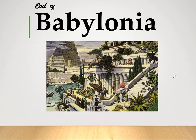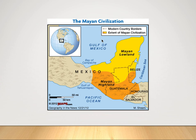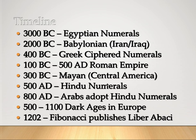Now let's briefly look at the Mayan numbers. This civilization flourished between approximately 300 to 900 AD. The Mayans had a place value system using base 20, and importantly, the Mayans are credited with introducing the number zero. They were located in the Gulf of Mexico region, and their numerical system can be seen in the Mayan codices, which show symbols for numbers like 9, 18, and 2.